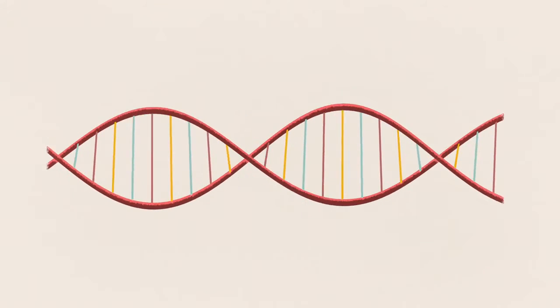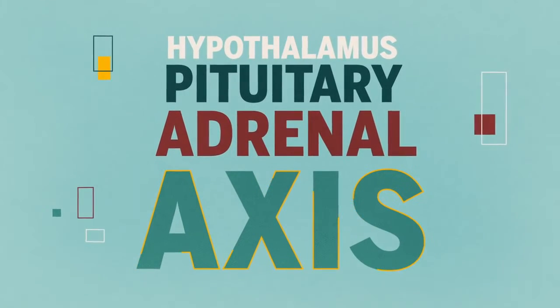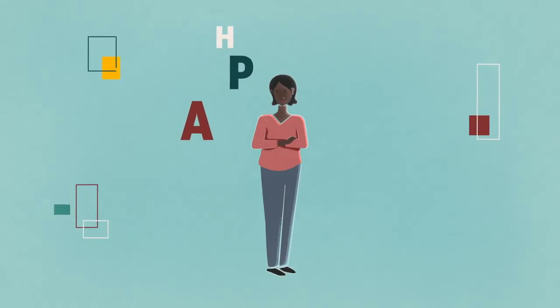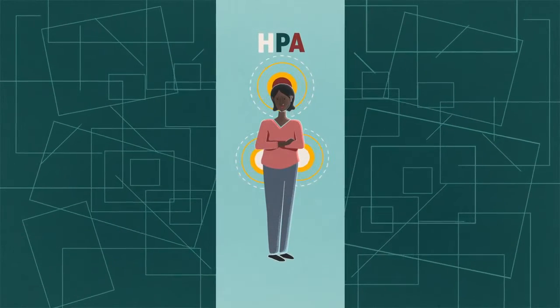Stress begins with something called the hypothalamus-pituitary-adrenal axis, a series of interactions between endocrine glands in the brain and on the kidney, which controls your body's reaction to stress.